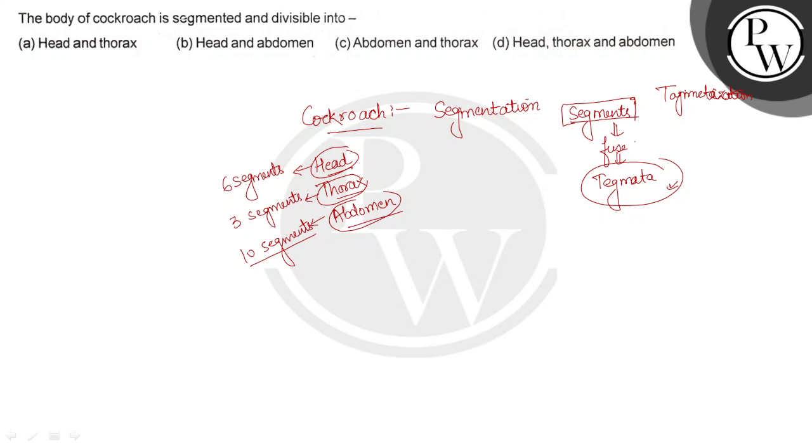The body of a cockroach is divided into three tagmata. This is the triangular head. If this is the body of cockroach, here the head is projecting downward then thorax. Thorax is divisible into three regions: prothorax, mesothorax and metathorax and then there are ten abdominal segments.